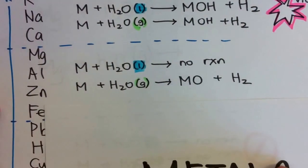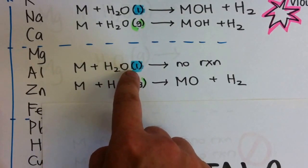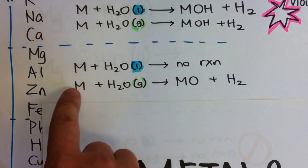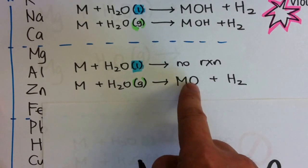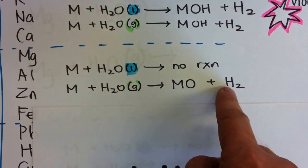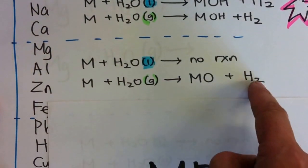Now the second group of metals are less reactive. So when you put them with water, there is no reaction. However, when you put them with steam, they will form a metal oxide. Example, zinc oxide plus H2. If you put aluminum and steam, you get aluminum oxide plus H2.